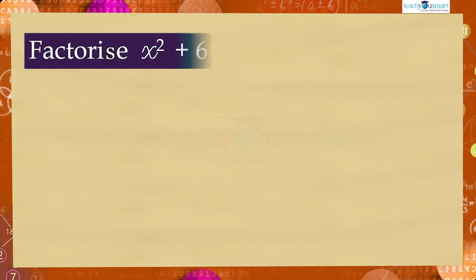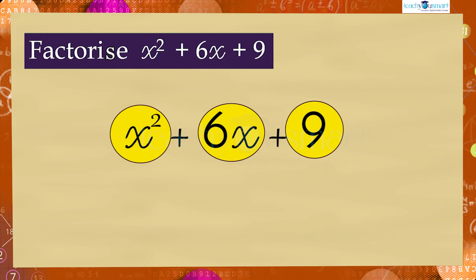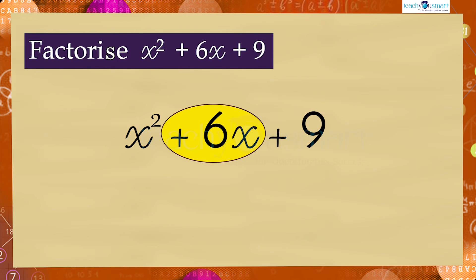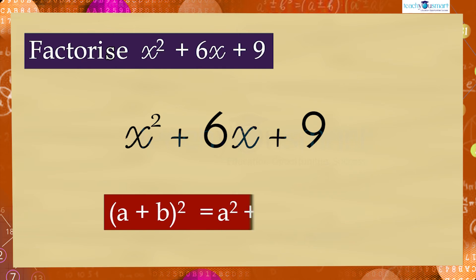Let's do another example. Factorize: x² + 6x + 9. The given expression is x² + 6x + 9. It contains only three terms and the middle term has a positive sign, so we can apply the identity (a + b)² = a² + 2ab + b².